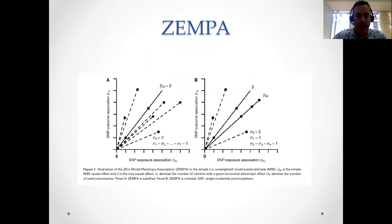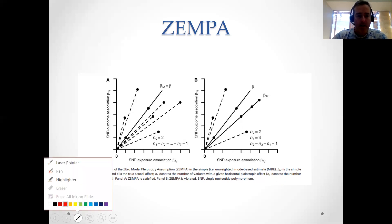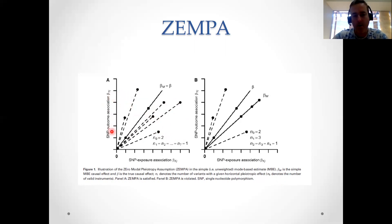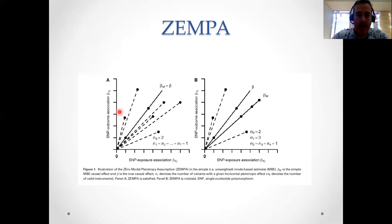Let's look at a graphical illustration to make that a little bit clearer. Imagine that we've got eight SNPs in our MR analysis and we're plotting each SNP according to its SNP-outcome association on the y-axis and its SNP-exposure association on the x-axis. If we were to draw a line from the origin to each SNP, the slope of that line would be an estimate of the causal effect for each of those SNPs.